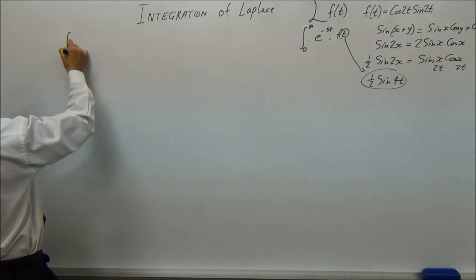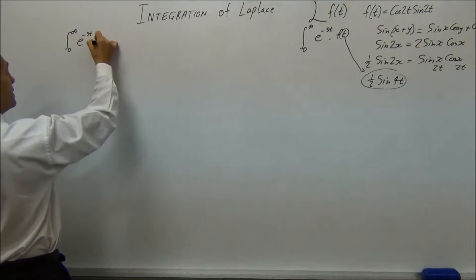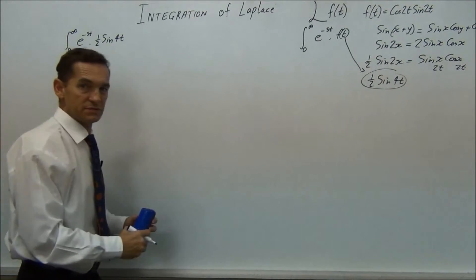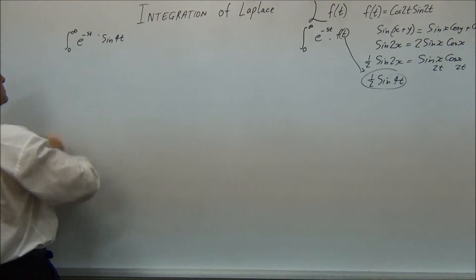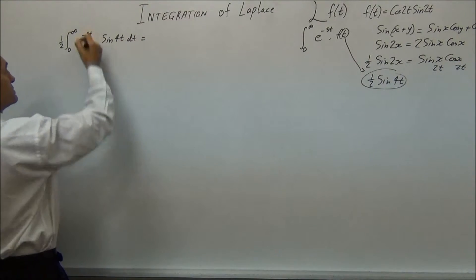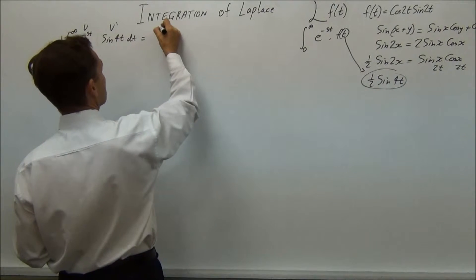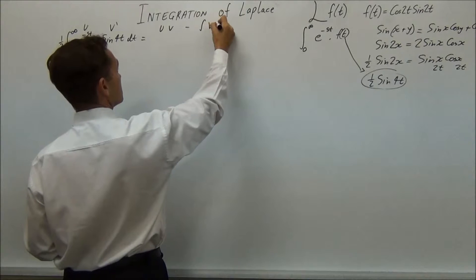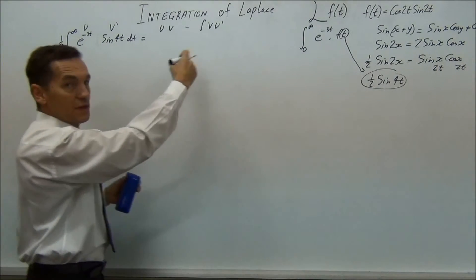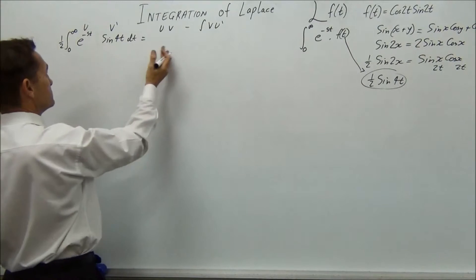We're going to integrate from 0 to infinity of e to the minus st multiplied by ½ sin 4t. There's a constant fraction there, so the first thing to do is move that half out the front. We want to integrate the whole thing with respect to t, and we'll do it by parts — making e to the minus st equal to u and sin 4t equal to v dash. It works out the same either way. We'll use the formula u·v minus the integral of v·u dash, and we'll end up doing it twice, because integrating sin gives cos, then integrating again gives back sin. That cycling pattern is what we're looking for.